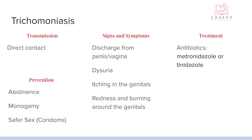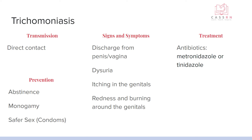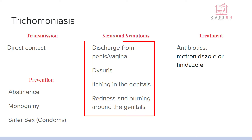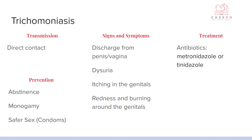Trichomoniasis is caused by a protozoan parasite called Trichomonas vaginalis. Seventy percent of people infected actually don't have any symptoms. This is direct contact — abstinence, monogamy, and condoms for prevention. The 30% who do have symptoms will have discharge, dysuria, itching, and redness and burning around the genitals. This is also treated with an antibiotic.